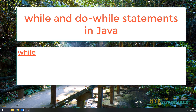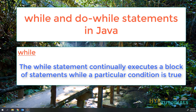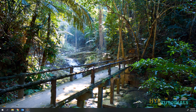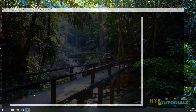So first of all, what is a while statement? The while statement continuously executes a block of statements while a particular condition is true. That means we are executing some statements continuously until the condition is actually returning false. When the condition is returning true, we execute the statements, and when the condition returns false, we break out of it and stop executing the statements.